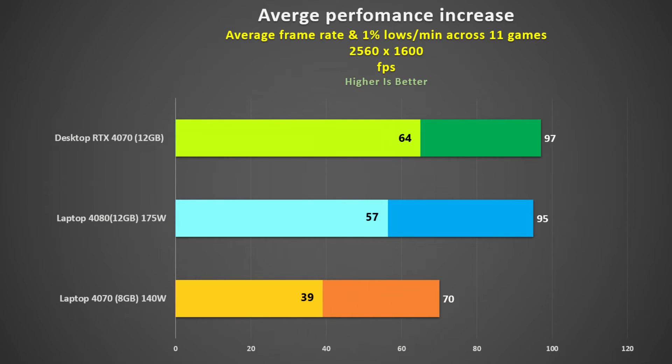Looking at the averages across 11 games: considering average frame rate, the laptop 4080 beats the desktop 4070 in 5 games, tied in 2, and the desktop card won the remaining 4. So it was actually quite close, as one would expect given the specifications of the two cards — the higher shader count on the mobile chip is countered by the higher boost clock of the desktop card by virtue of its higher power. The mobile 4070 shouldn't be called a 4070 at all; it's nothing remotely like the desktop card, which is 39% faster. Out of 9 games measured for 1% lows or minimum frame rate, the desktop 4070 won 6 of them, resulting in a 12% average improvement over the mobile 4080.